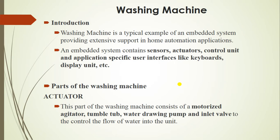First, we are going to see about the washing machine. A washing machine is nowadays found in all our homes. It is an electronic device. In that electronic device, we have some embedded system parts: sensors, actuators, a control unit, and application-specific interfaces like keyboards and display units. Keyboards and display units are used for giving inputs and outputs.